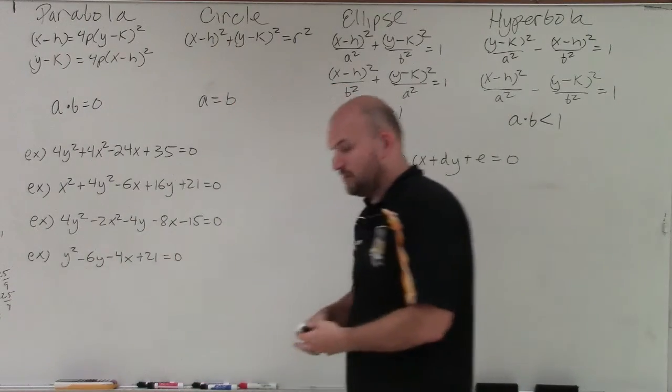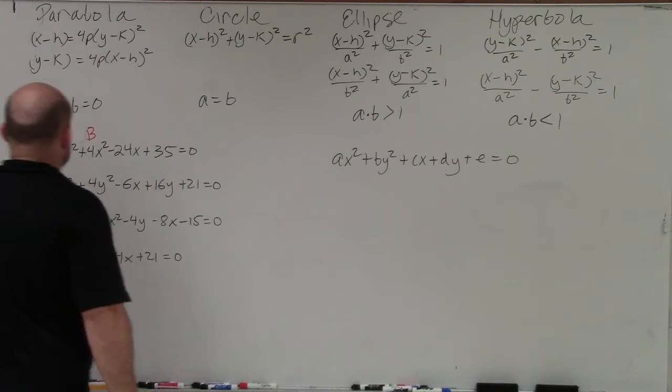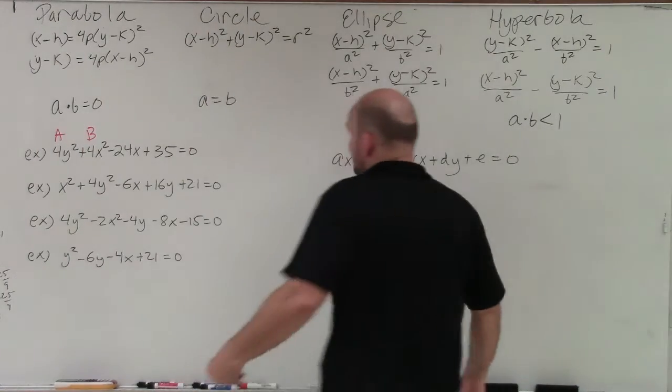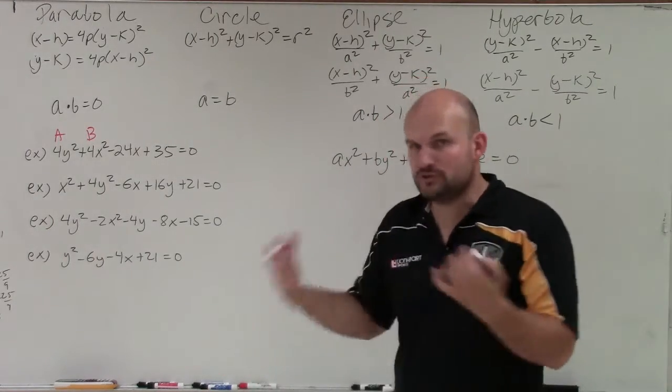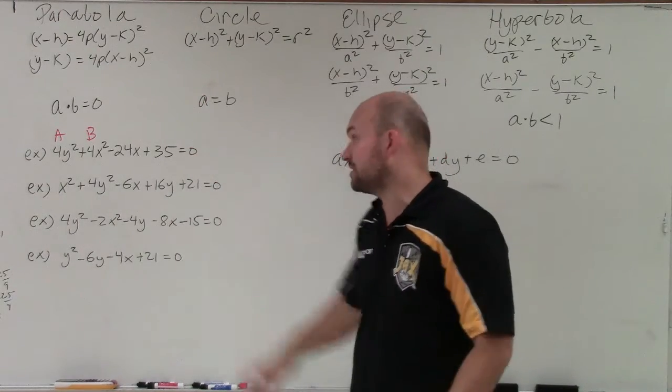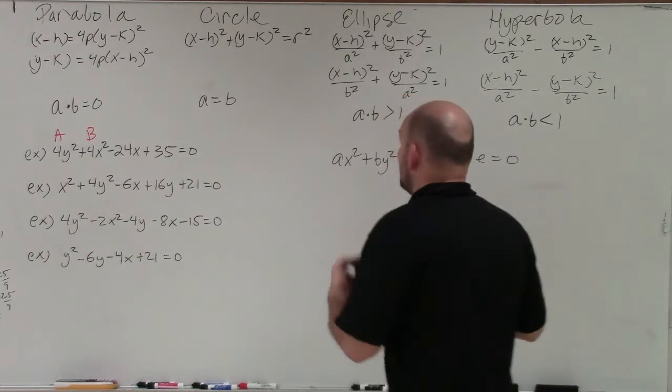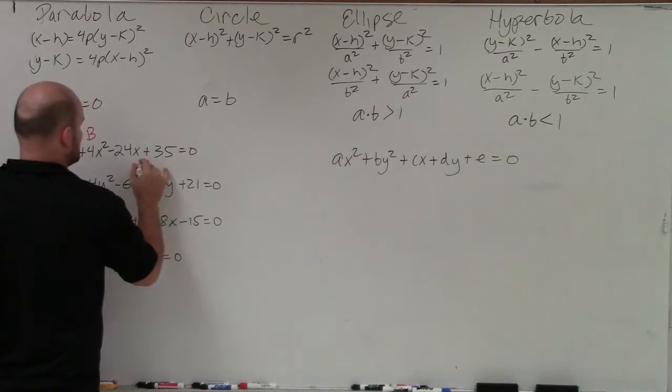So the main important thing that you want to do in classifying is identify your a and your b. So here, I notice that my a and my b are exactly the same. So if I was going to complete the square and do all this stuff, which you could do and try to write it into this format and see which one it works, that's just a lot of work. I notice that my a and my b are exactly the same. Whenever my a and my b are exactly the same, I know it's going to be a circle.